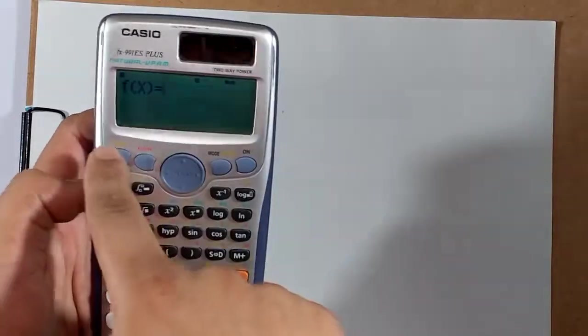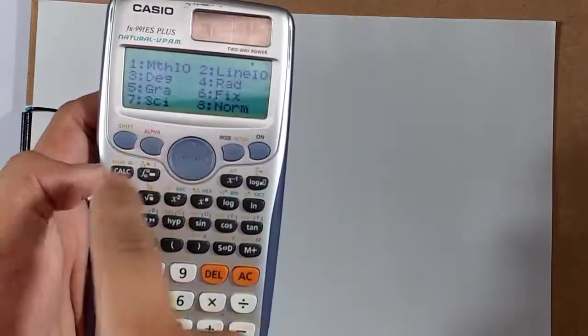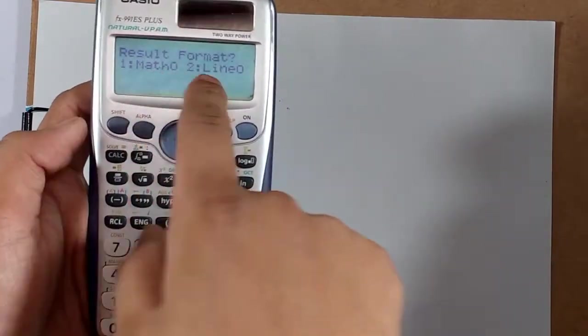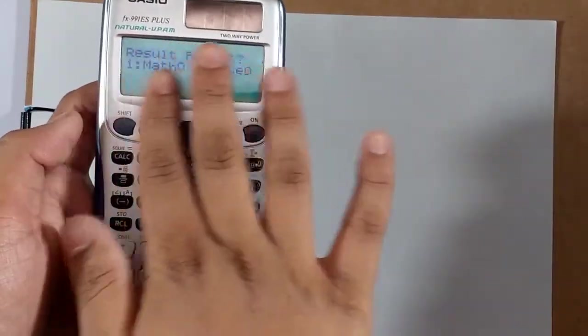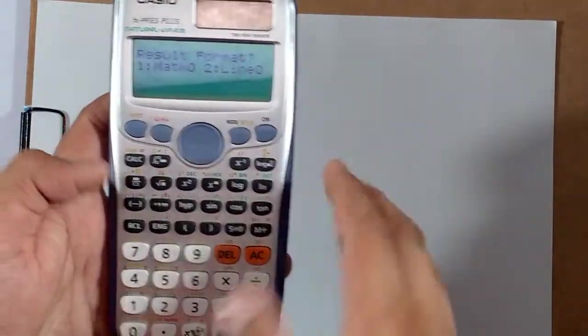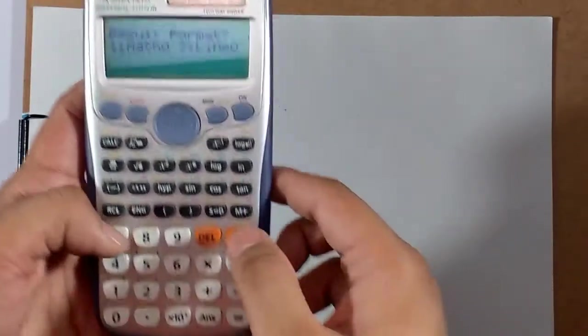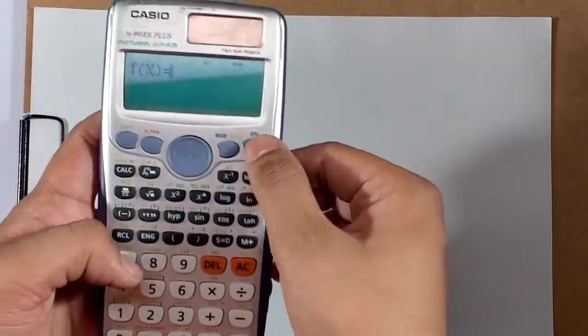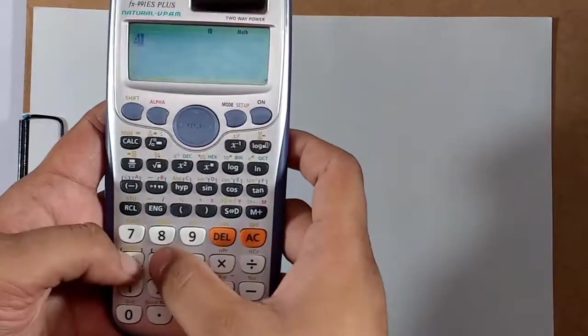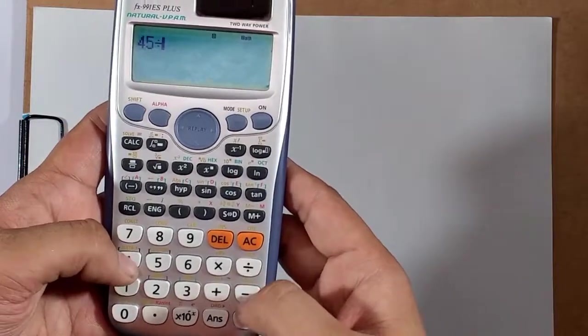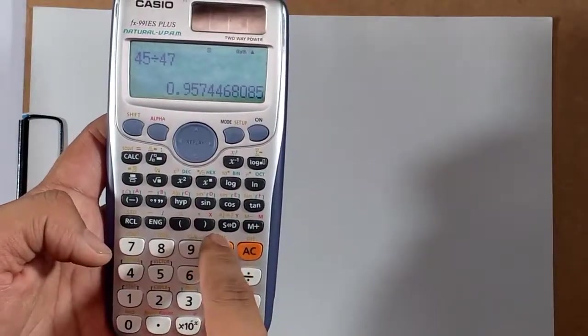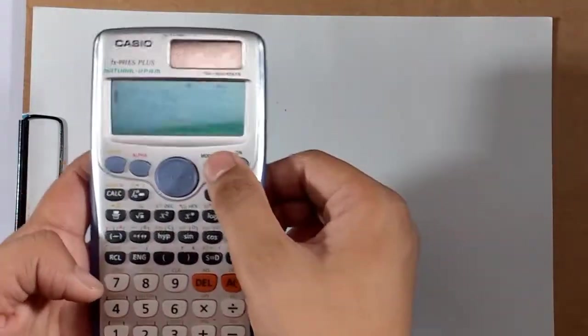Let's press shift and this is the setup button. Math IO or Line IO. Math IO gives the natural display, so it's like division in the natural form like we write on paper. The second is Line IO. For example, let us go to comp settings. 45 divided by 47, we are not going to get the division part. That's the basic difference between Math IO and Line IO.